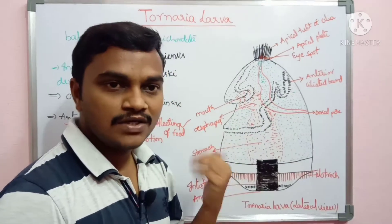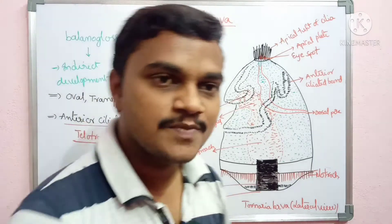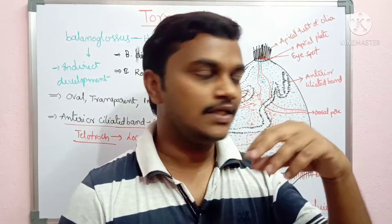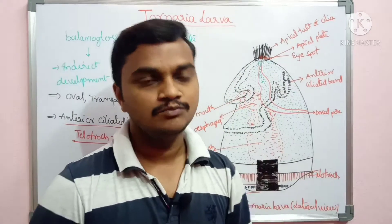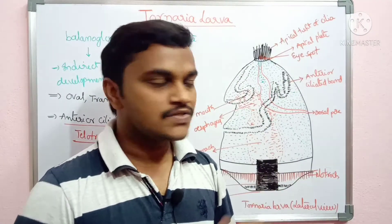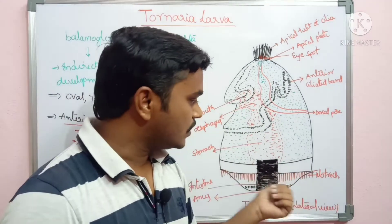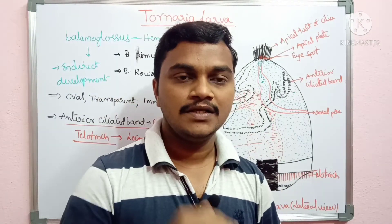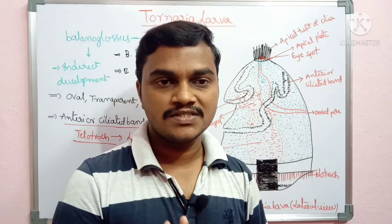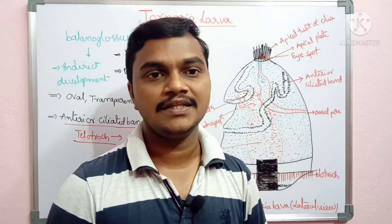This dorsal sac or water sac will turn into the proboscis of Balanoglossus. The anus is also present. The free-swimming tornaria larva contains a pulsating vesicle, which is a pulsating organ. This pulsating organ will turn into the cardiac sac in the adult life during metamorphosis.